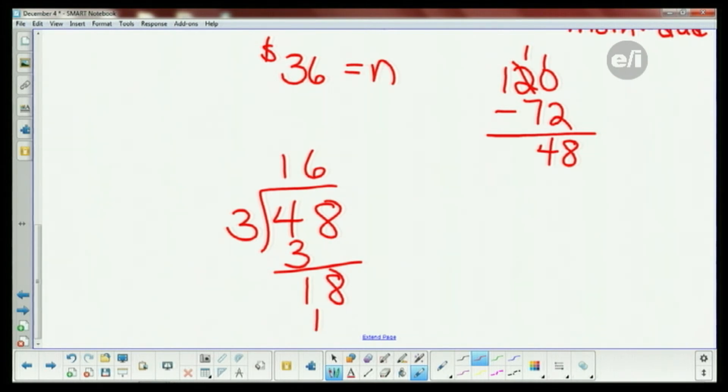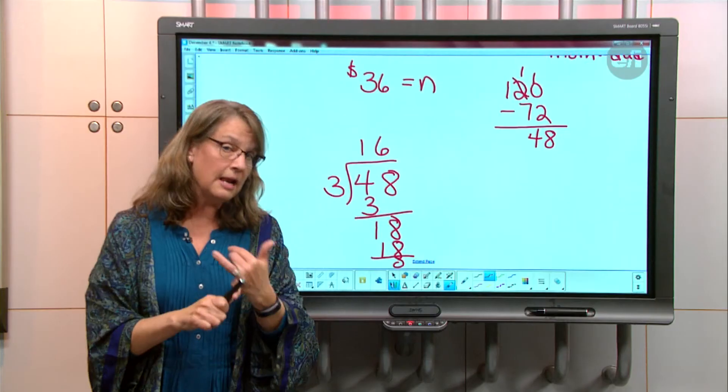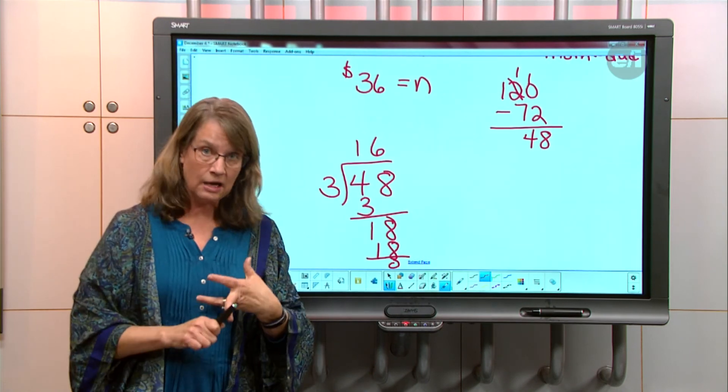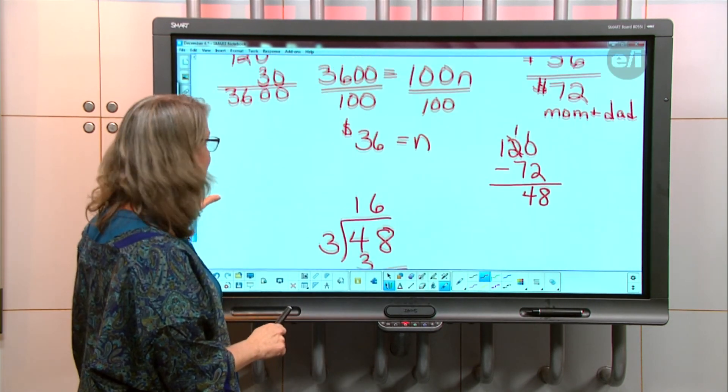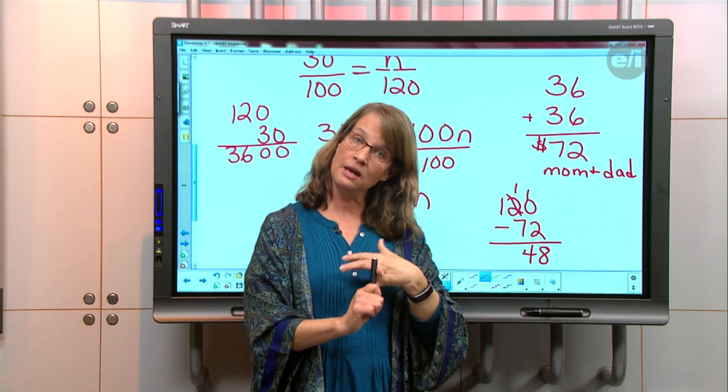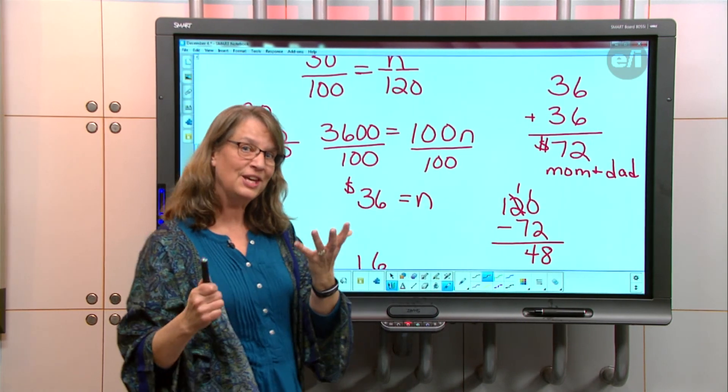She could spend $16 on her sister, $16 on her brother, $16 on her friend, and then spend $36 on mom and $36 on dad. Thank you very much.